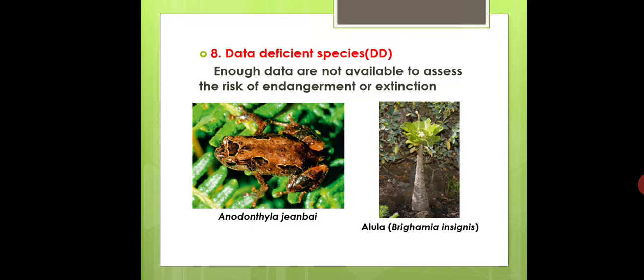An example of a data deficient species is the frog Nannophrys guentheri. There is also a plant example called Alula — or cabbage on a stalk — with the scientific name Brighamia insignis, in which the top portion resembles a cabbage.